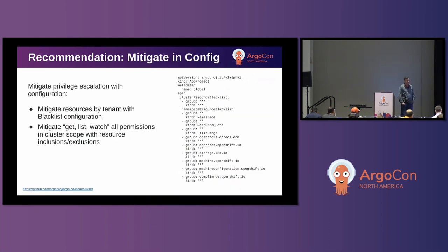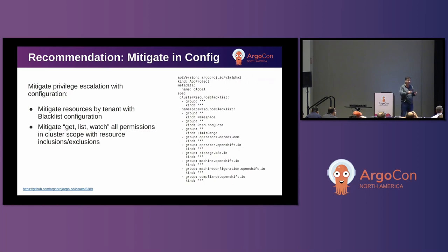Another recommendation is mitigating the underlying Kubernetes privileges. In app projects, you can blacklist resources — for example, blacklisting all cluster-scoped resources. If you must use a cluster-scoped instance managing many namespaces where namespace scope won't scale, you can blacklist that out to mitigate the privilege escalation issue. The other option is resource inclusions or exclusions, which is global to Argo CD. You can tell Argo to completely ignore certain resources — no watches, no interaction. Even though the underlying service account still has that privilege, Argo will ignore it, mitigating the problem. But it is just mitigation.